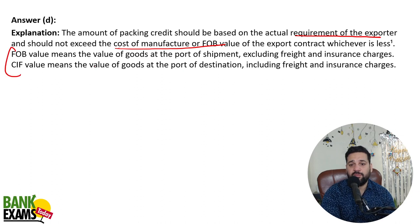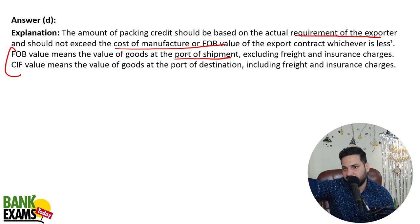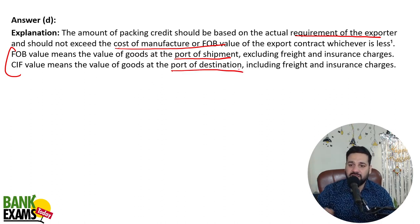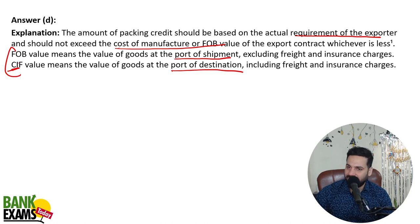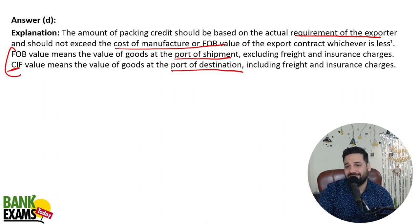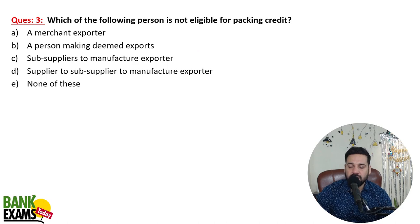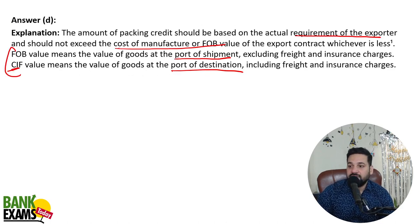FOB means the value of goods at the port of shipment — where the exporter is dispatching from. CIF (or CAEF) value means the value of goods at the port of destination, which includes transportation charges, any taxation, custom duty, and insurance. These charges are not included in the FOB value.